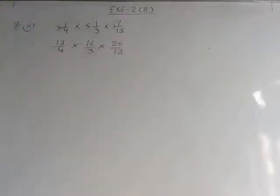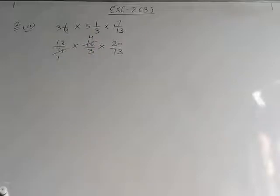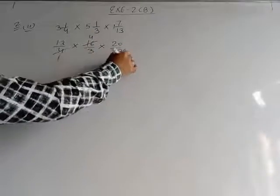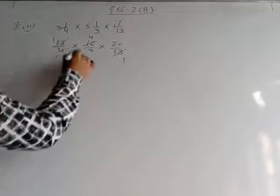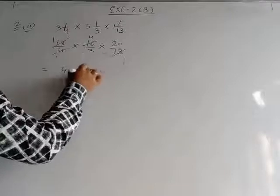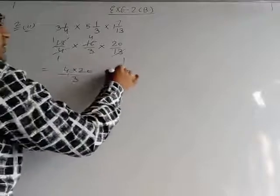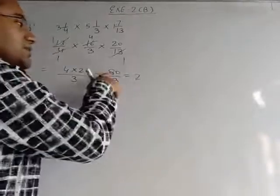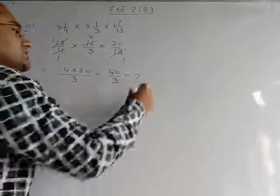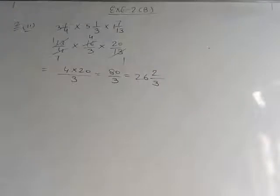In the next step, we cancel these numbers with the same table. 4 and 16: 16÷4=4, so 4 in denominator and 4 in numerator. We can also cancel 13 in numerator and 13 in denominator — they cancel to 1. Now the remaining terms in the numerator are 4 and 20; in the denominator only 3 remains. So 20×4 = 80 upon 3. Converting to mixed fraction: 3×26=78, remainder 2. So the answer is 26 whole 2/3.